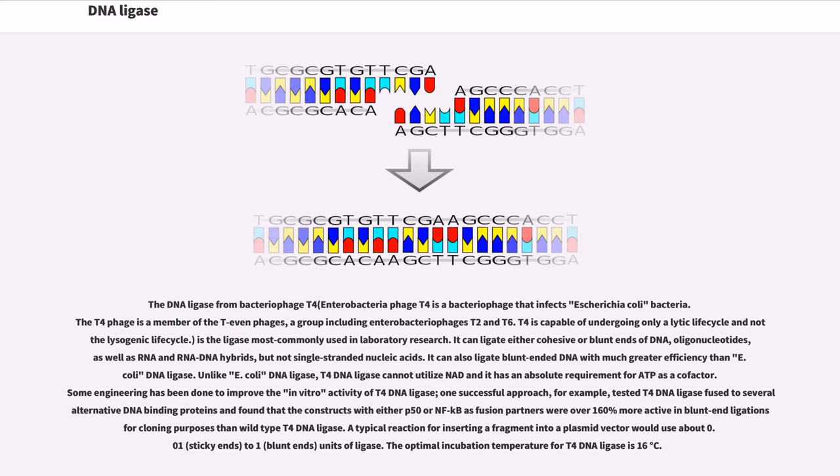One successful approach, for example, tested T4 DNA ligase fused to several alternative DNA binding proteins and found that the constructs with either P50 or NFKB as fusion partners were over 160% more active in blunt-end ligation for cloning purposes than wild-type T4 DNA ligase.